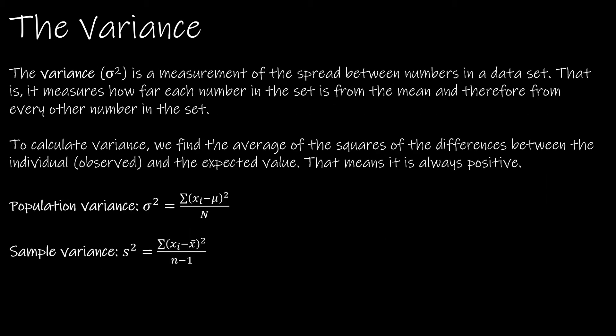Another measure of dispersion is the variance. The variance is simply a measurement of the spread or distance between the numbers in a data set. We measure how far each value of our data set is from the mean, and therefore how spread out all of our data is. To calculate the variance, we find the average of the squares of the differences between the individual values and the expected value.